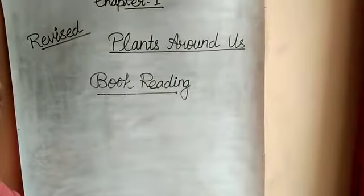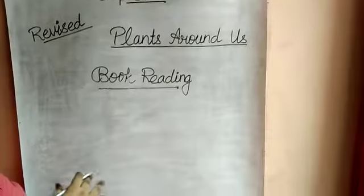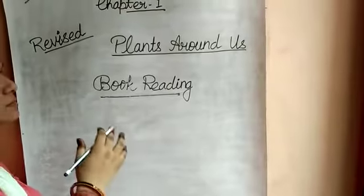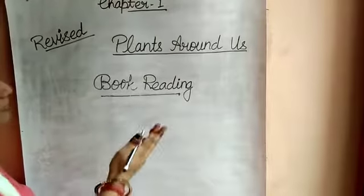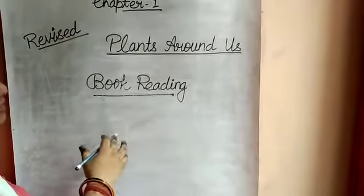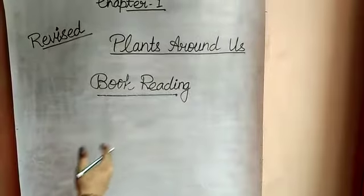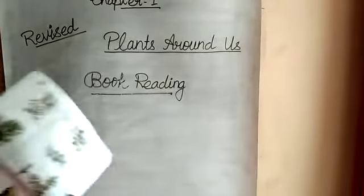Types of plants include trees, shrubs, herbs, and climbers. So in types of plants we have trees, shrubs, herbs, and climbers. And now we read it.